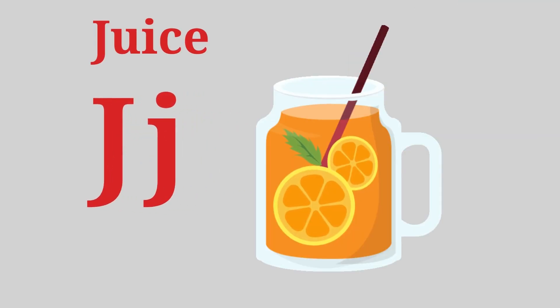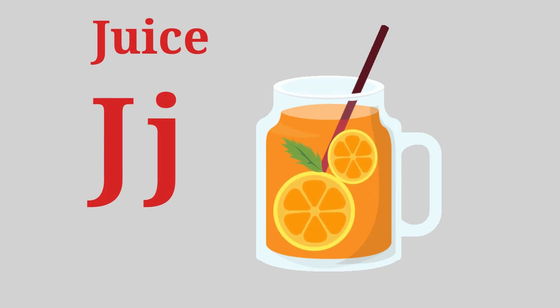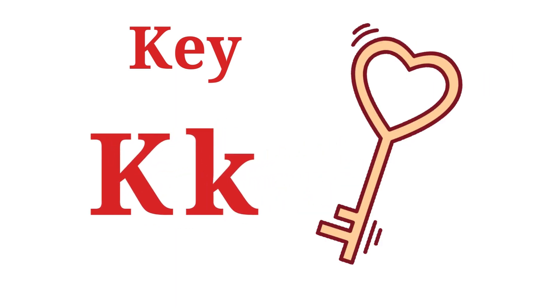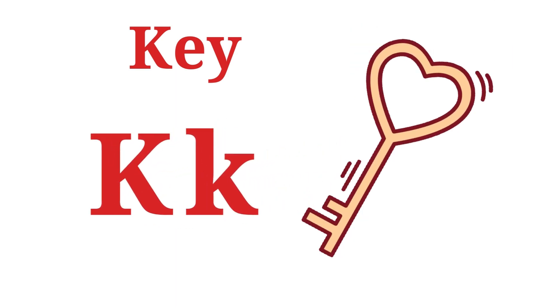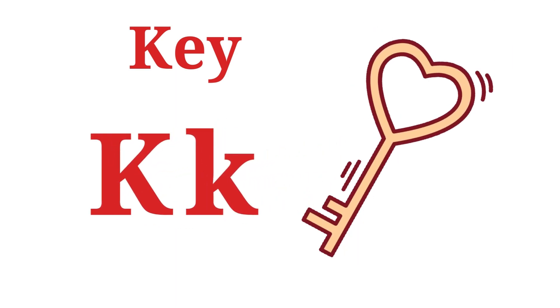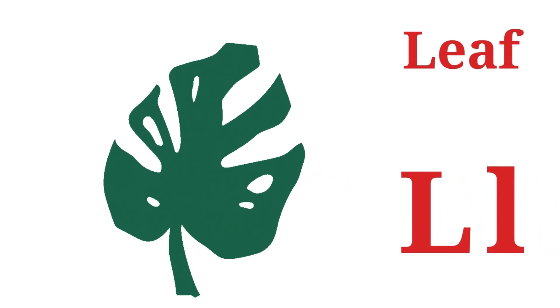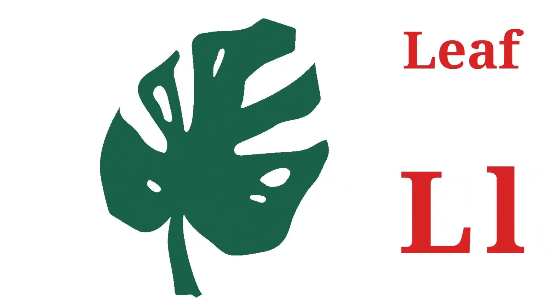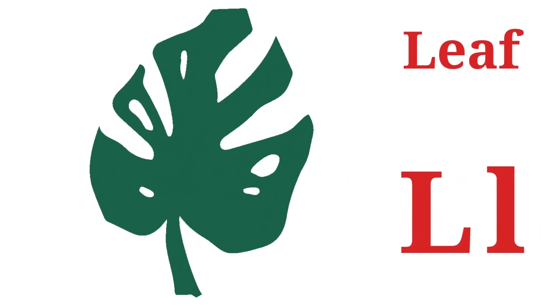J for Juice. K for Key — K-K-K-Key. L for Leaf — L-L-L-Leaf.